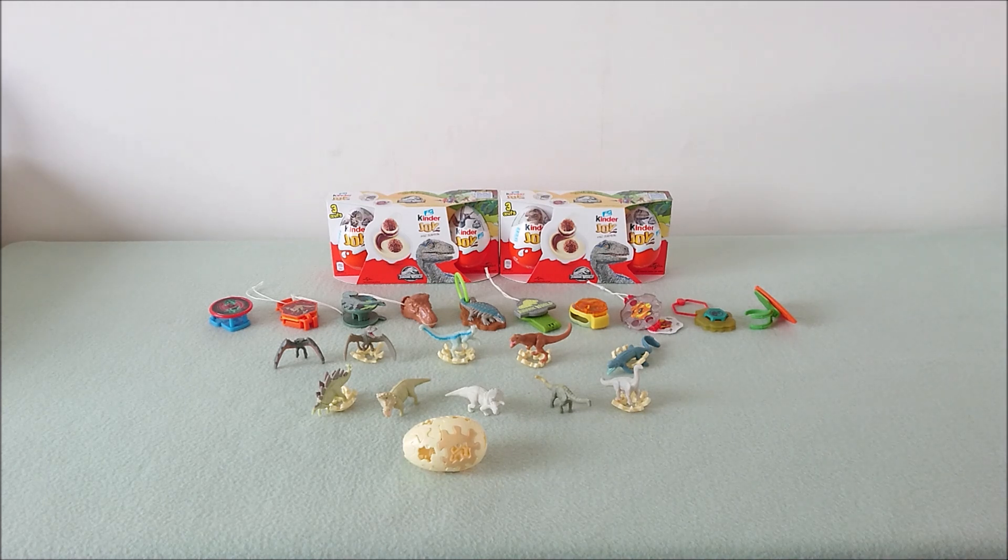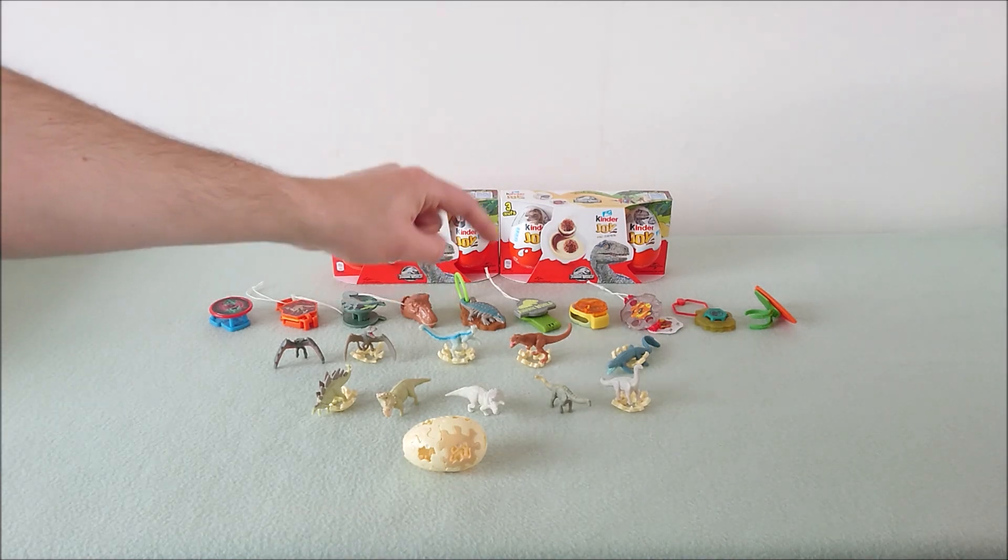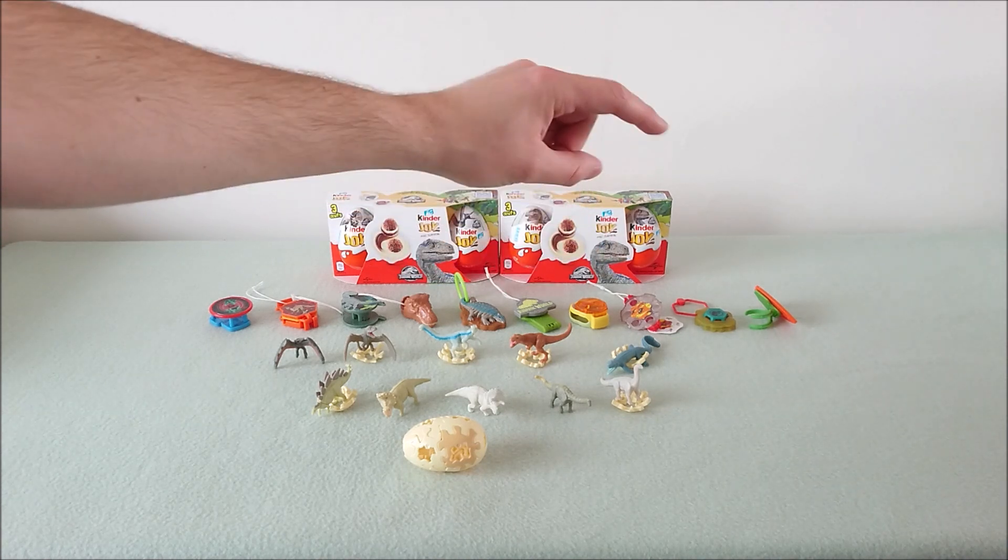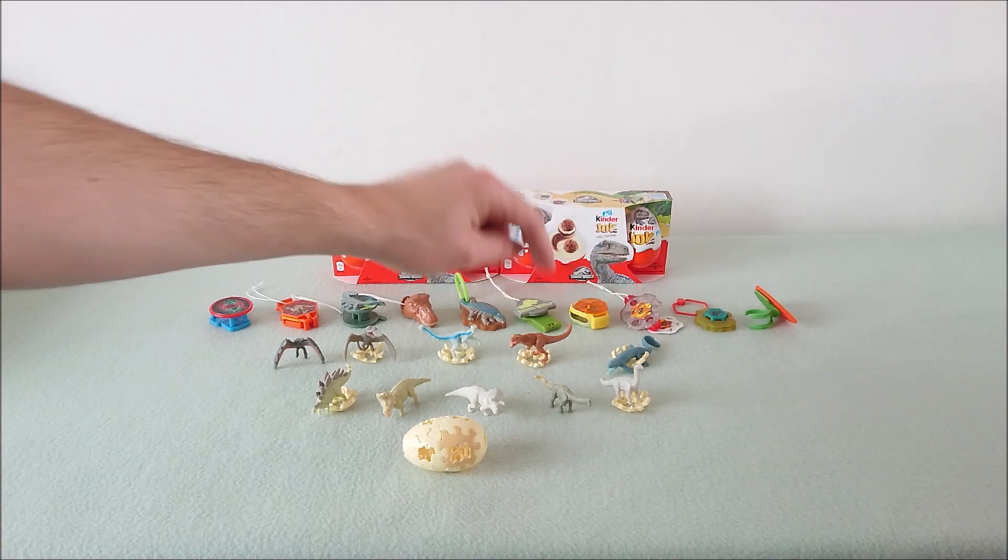The series of minifigures was released in a few countries already like Ukraine, but they didn't have the whole series. They only had Dimorphodon, Velociraptor Blue, T-Rex, Mosasaurus, Brachiosaurus, Batsaurus, Triceratops and Stegosaurus.